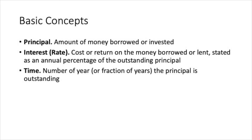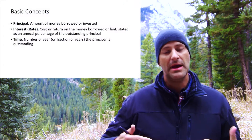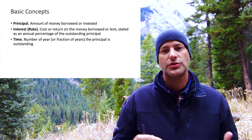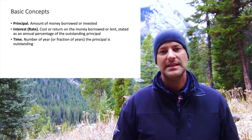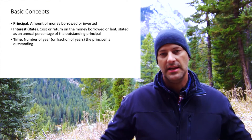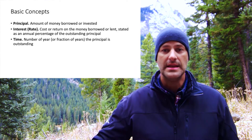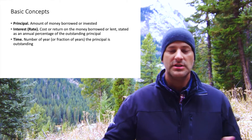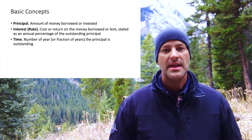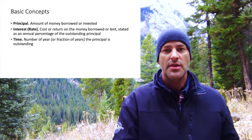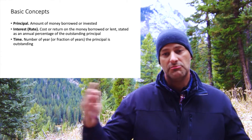Some basic concepts we'll be going through over and over again — there are three: principal, interest rate, and time. The principal is simply the amount borrowed or invested. The interest rate is the cost or return of the money borrowed or lent, stated as an annual percentage of the outstanding principal. The time is just the amount of time we'll have access to this — anywhere from a month to multiple years, like 30 years for a mortgage.